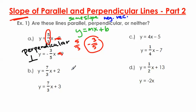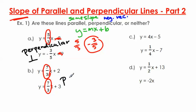Moving on to b: we have y equals 7 over 3x plus 2, and y equals 7 over 3x plus 3. We're only looking at slope, and the slope 7 over 3 is exactly the same in both equations. So these two lines are parallel to each other. The symbol for parallel is two vertical lines.